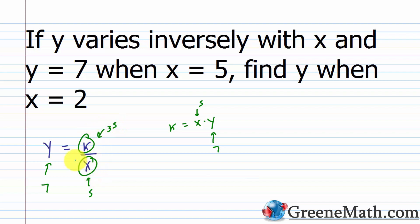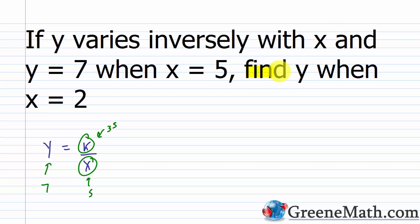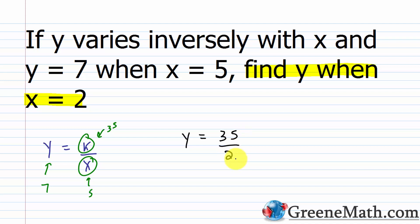Once I know k is 35, I can figure out the second scenario: find y when x equals 2. I know k is 35 and x is 2, so I get 35 halves, which you could write as 17.5 or keep in fractional form as 35 halves.